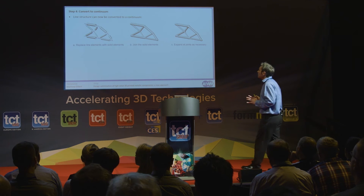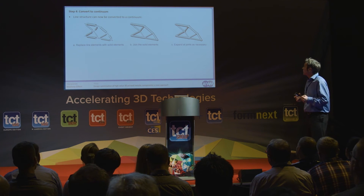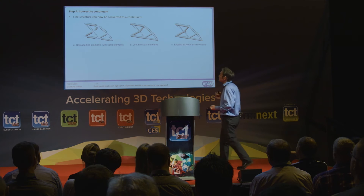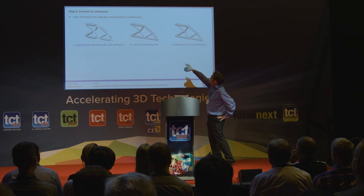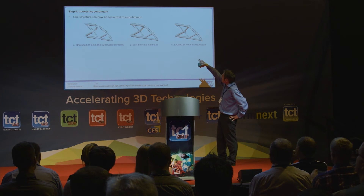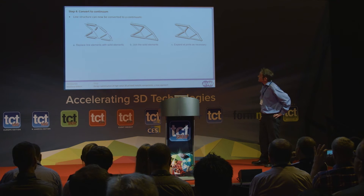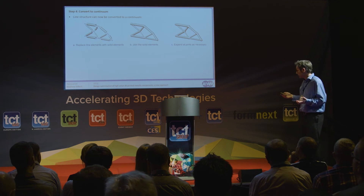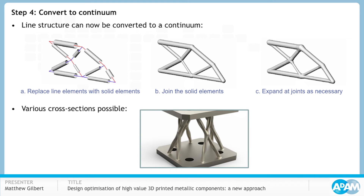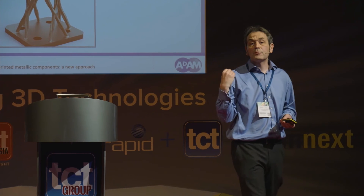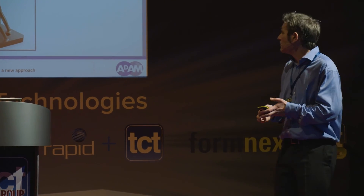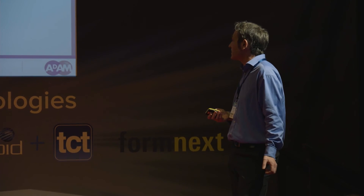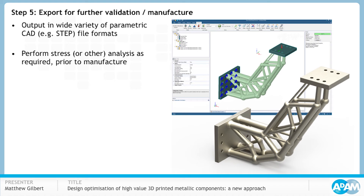The next step is to convert the design into a continuum. We replace the line elements with solid elements, join the solid elements with connectors at the intersections — it could be a simple sphere — and expand the joints as necessary to ensure we don't have stress concentrations. We could use cylindrical bars or other cross sections, such as cruciform sections, and for certain AM processes we could potentially have hollow sections to provide greater buckling resistance. Finally, we can export the solution in various formats.